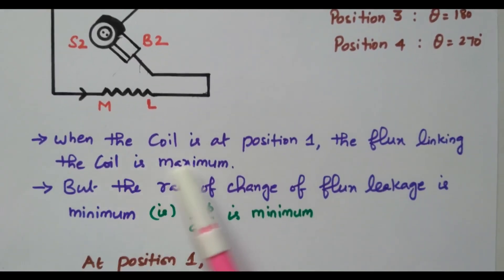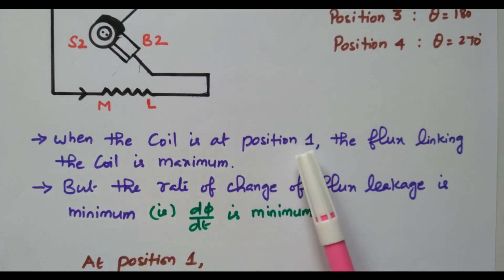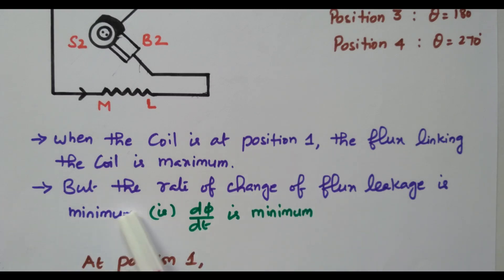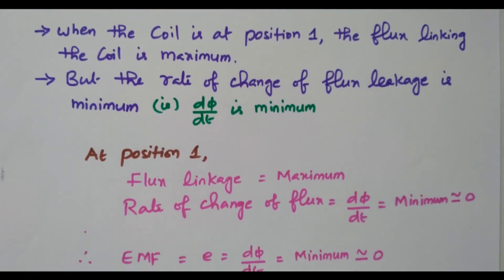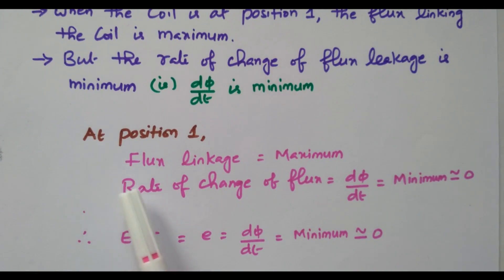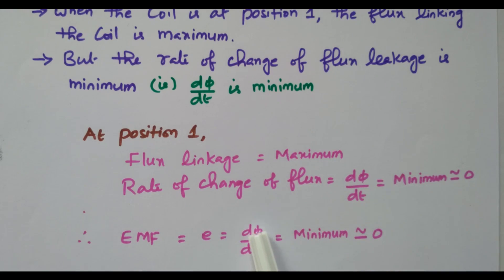When the coil is at position 1, the flux linking the coil is maximum — the flux from the N pole is easily linked with the S pole because the area occupied by the coil is very less. But the rate of change of flux, dφ/dt, is minimum. The flux linkage is maximum but dφ/dt is minimum. Since EMF is purely based on dφ/dt, and dφ/dt is minimum, the EMF is also minimum — that is, almost zero. At position 1 (0 degrees), the EMF induced is zero.